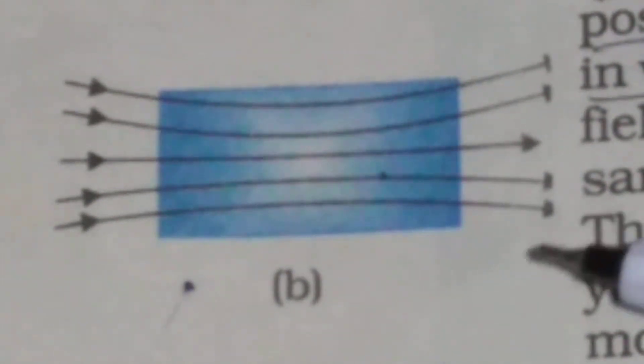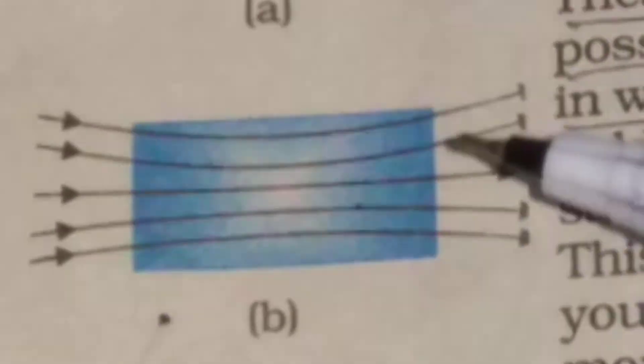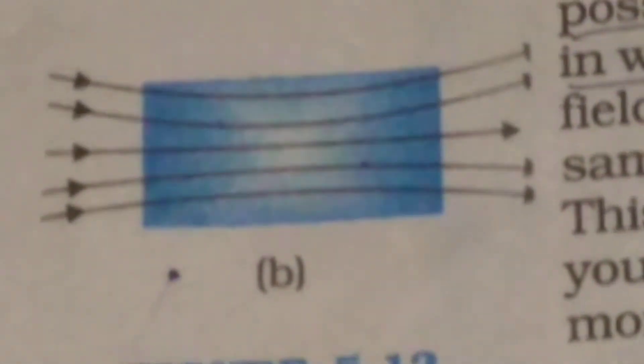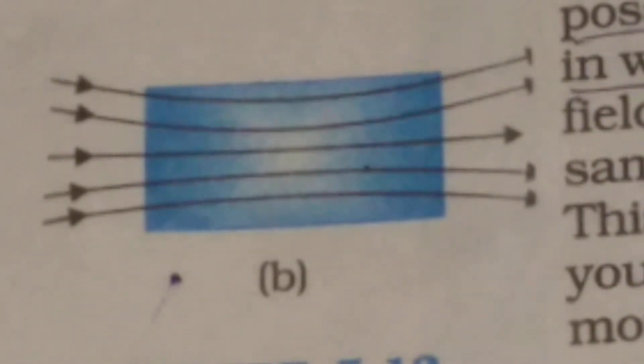In the figure, a paramagnetic material is shown. You see how the field lines are concentrated inside the material of a paramagnetic substance. That is why the field inside the paramagnetic material is enhanced.